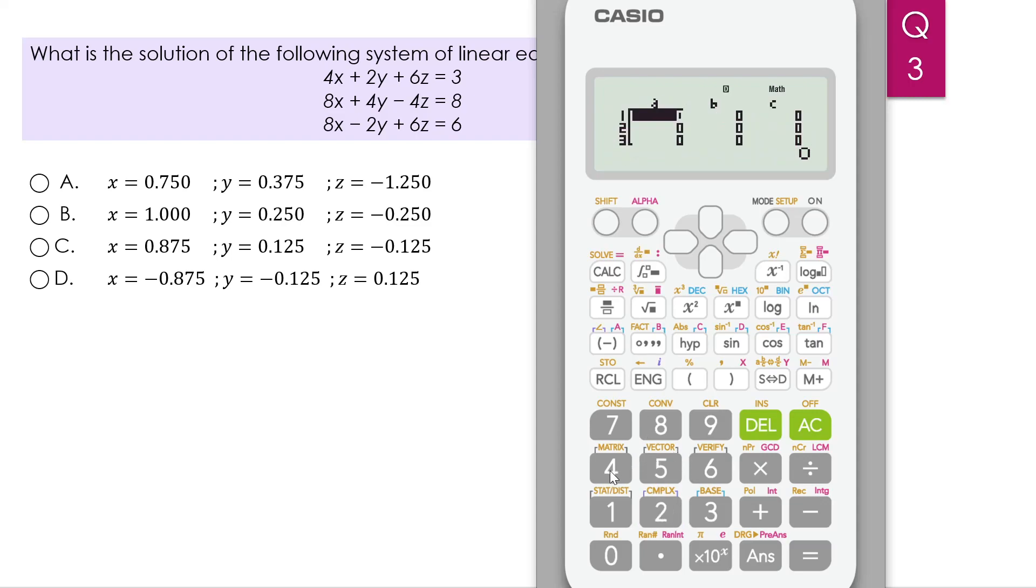So a is 4, 2, 6, and 3. We have 8, 4, negative 4, and 8. We have 8, negative 2, 6, and 6. So we press equal.